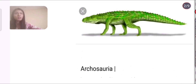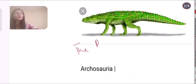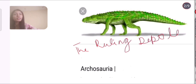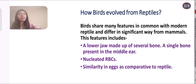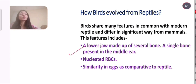Here is the diagram of the great Archaeosaur — the ruling reptile — a highly successful group of vertebrates. The question arises: how did birds evolve from reptiles? Birds share many features in common with modern reptiles and differ in significant ways from mammals.